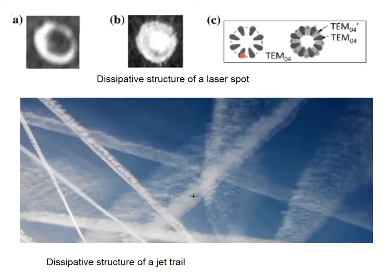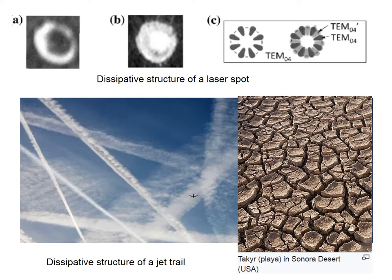A jet leaves a trail which is another pattern of dissipative structures. Takyr on a shallow lake bottom is a result of solar energy transformation to vortex evaporation and shrinkage of the clay surface.